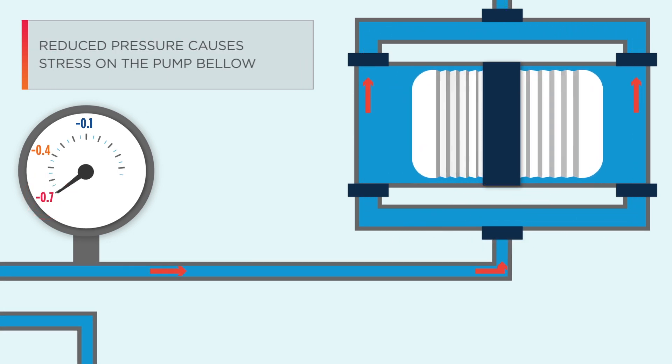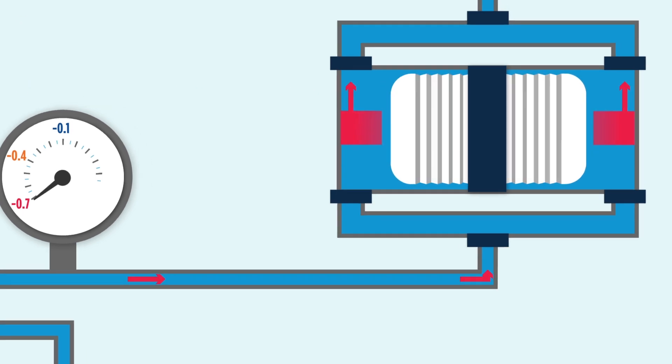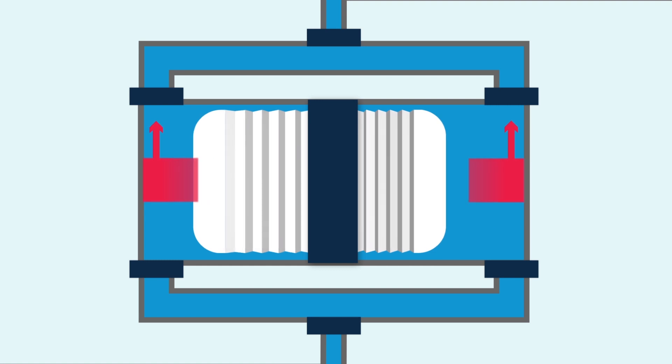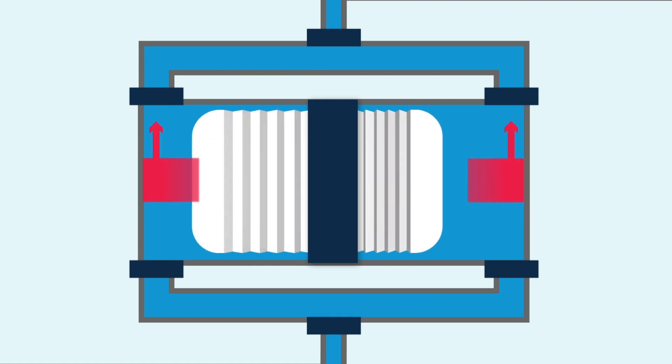A continued drop in pressure creates a vacuum which stresses the bellow and causes a structural deformity. Down the road, this deformity could lead to a fracture and result in a total system failure.